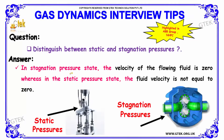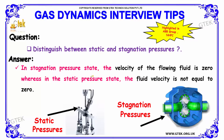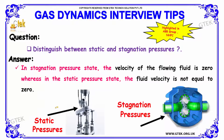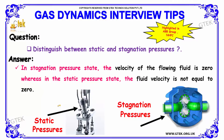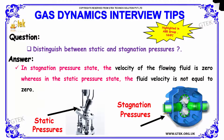Moving on to the next question: distinguish between static and stagnation pressures. In the stagnation pressure state, the velocity of the flowing fluid is zero. Whereas in the static pressure state, the fluid velocity is not equal to zero. We can see the depiction of static pressure and stagnation pressure here.